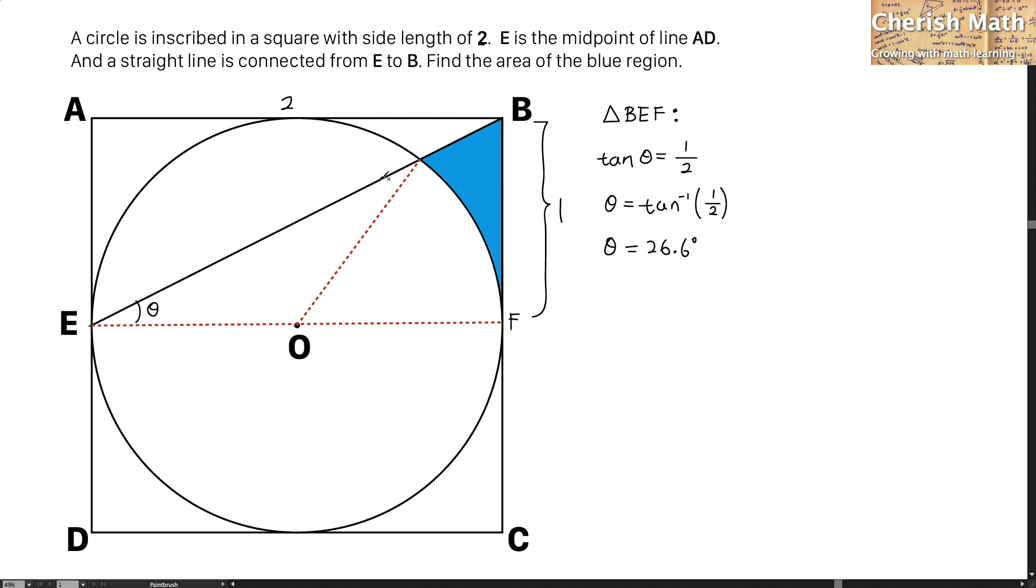And now I have to find for this angle that is same as theta. The reason why is because this is an isosceles triangle. I am going to name the point here G. E, O, G is an isosceles triangle.